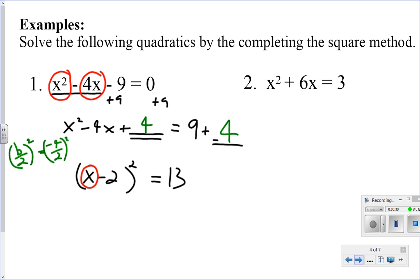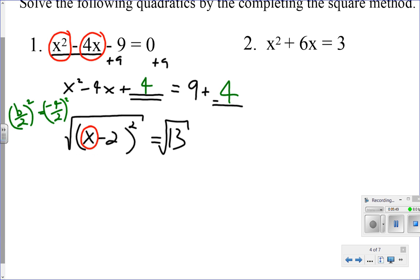So first thing we can do is we can square root this side and square root this side. Remembering when we square root something, there's a positive and negative answer. So over here, I get x minus 2 is equal to plus or minus the square root of 13. To get x by itself, I add 2. I get x is equal to 2 plus or minus the square root of 13. And that is my final solution.